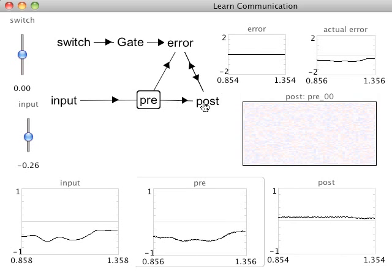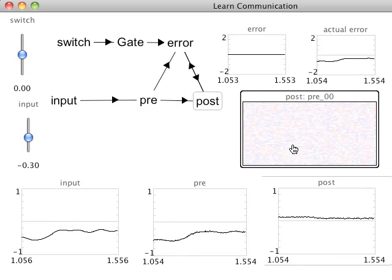The connection weights between those populations are reflected by this graph, which as you can see is not changing because learning is turned off.